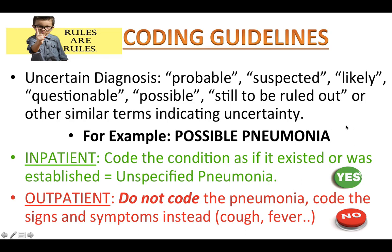This deals with uncertain diagnosis. If you are coding a record and the physician documents the final condition using terminology like probable, suspected, likely, questionable, possible, still to be ruled out, or other similar terms indicating uncertainty — according to the ICD-10-CM official coding guidelines — if the record is an inpatient record, you code that condition as if it existed or was established. In contrast, if this is an outpatient record, do not code that uncertain diagnosis.